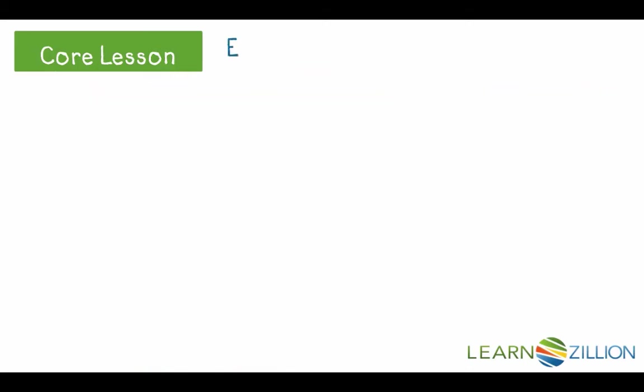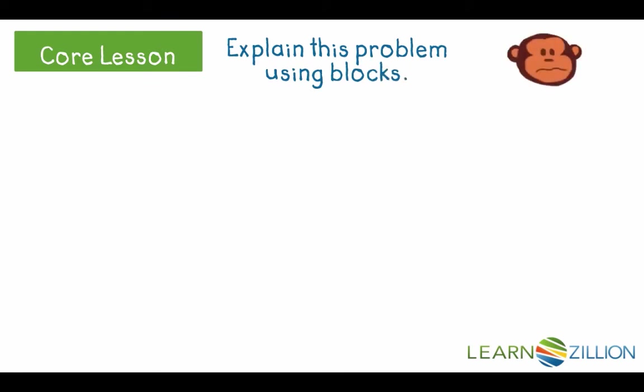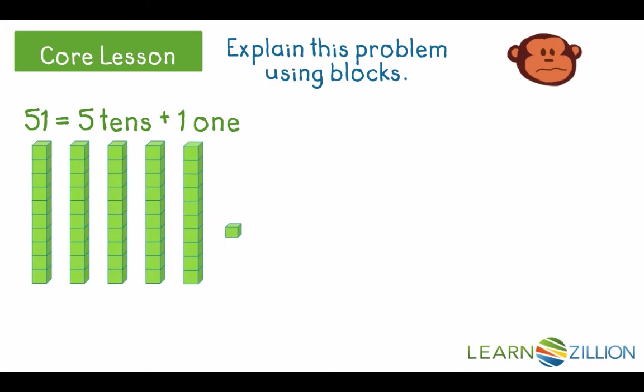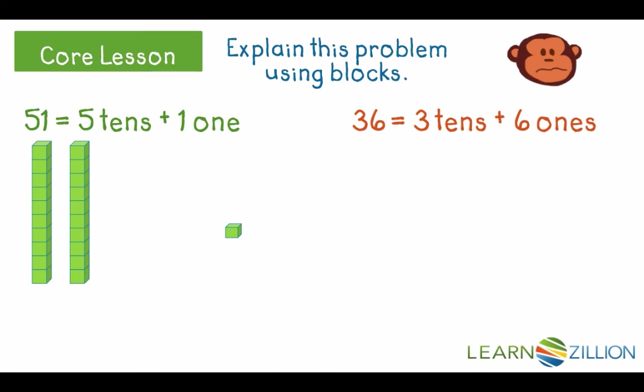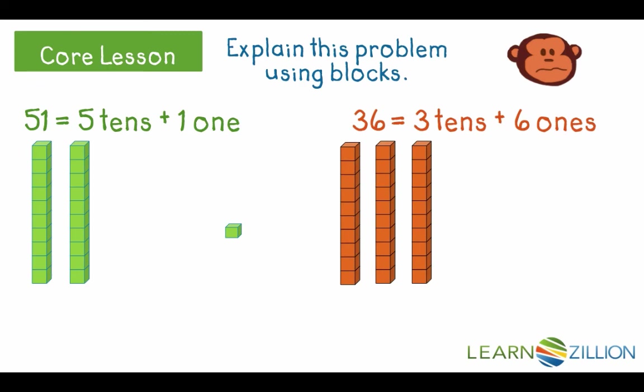Again, we could use blocks to explain the problem to the math monkey. These blocks show 51, 5 tens and 1 one. We need to subtract 3 tens and 6 ones. I can take away 3 tens, but I only have 1 one. I don't have enough ones cubes to move 6 of them over. So I break a group of 10 up into 10 ones.